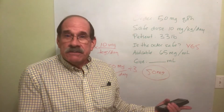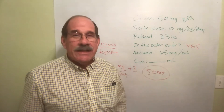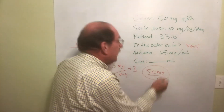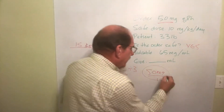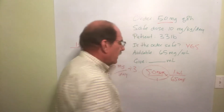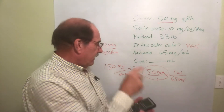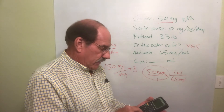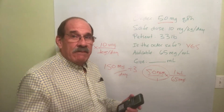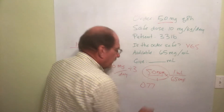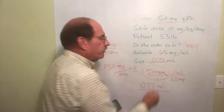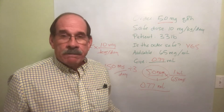Now I give the medication. I need to know the dosage strength. I want to give 50 milligrams; I have 65 milligrams per milliliter. Take 50 divided by 65 — the answer is 0.7692, which rounds up to 0.77 milliliters. So give your patient 0.77 milliliters, and everything is fine.